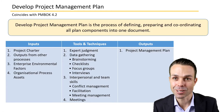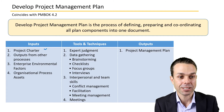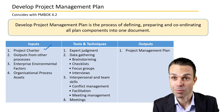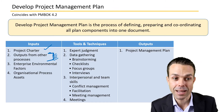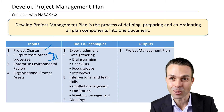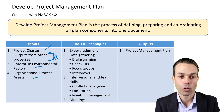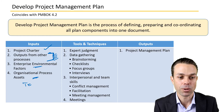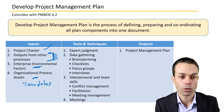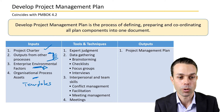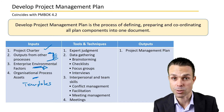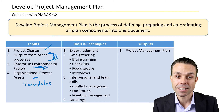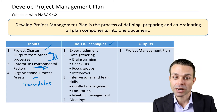The inputs, tools and techniques, and outputs for this process: inputs are the project charter, outputs from any other process — risk, quality, schedule, cost — all going into the project management plan. Also enterprise environmental factors and organizational process assets, such as templates, organizational politics, regulations — all of that goes into the project management plan.